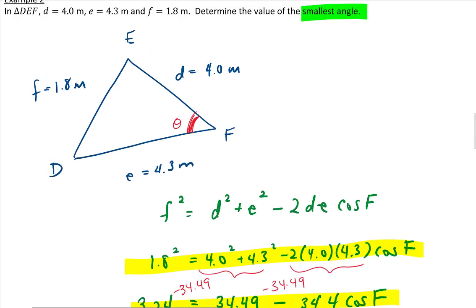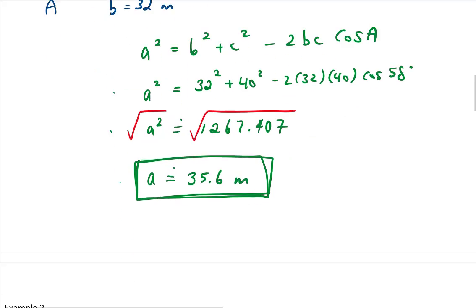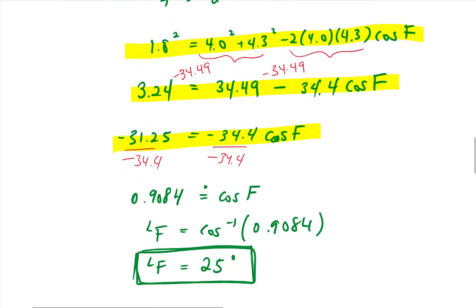So there's how we use the cosine law. To find the side, it's very quick. It's just three steps: one, two, and solve. To find an angle, there's a few more steps. We have to substitute, move the constant over, divide, then take the cos inverse. So there's a couple more steps when trying to find the angle using the cosine law.